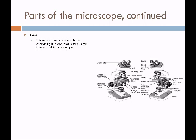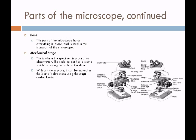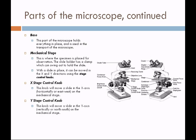The base is the part of the microscope that holds everything in place and is used in transport. The mechanical stage is where the specimen is placed for observation. There's a slide holder with a clamp that swings out and holds the slide snugly in place. With the slide in place, it can be moved in the x and y directions using stage control knobs. Never move the stage with your hands — always use these x and y stage control knobs or you might damage the microscope.